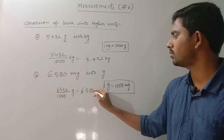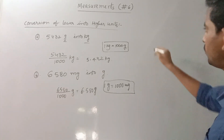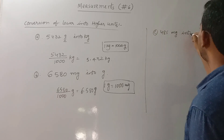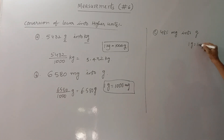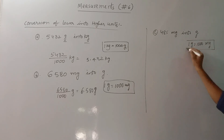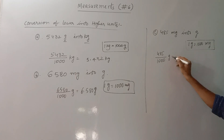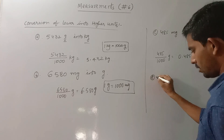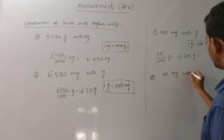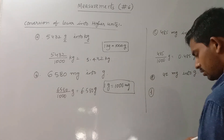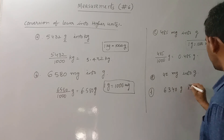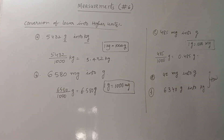6,580 milligrams is equal to 6.580 grams. So dividing by 1,000 moves the decimal point 3 places. We continue to convert milligrams into grams using this division method for further practice sums.